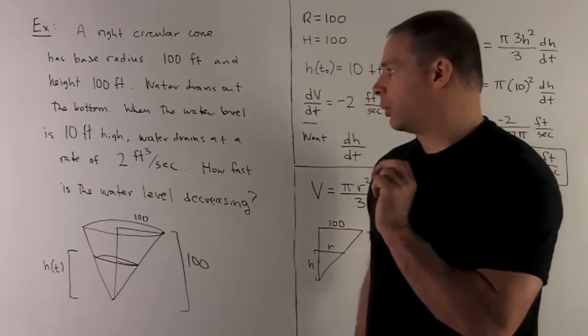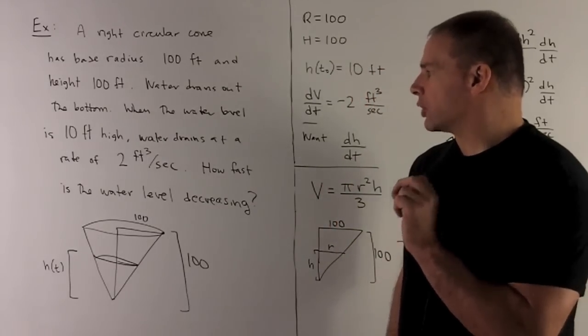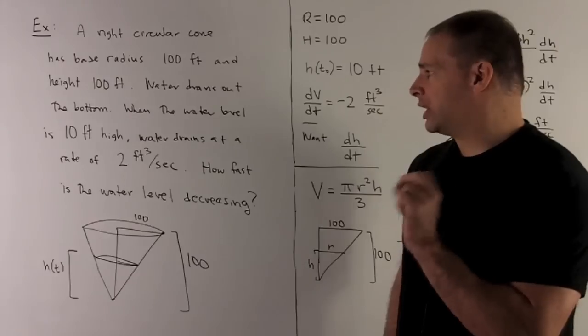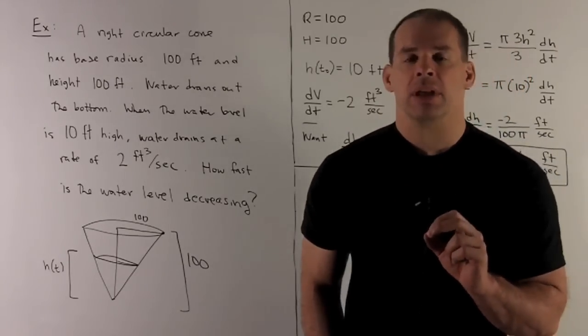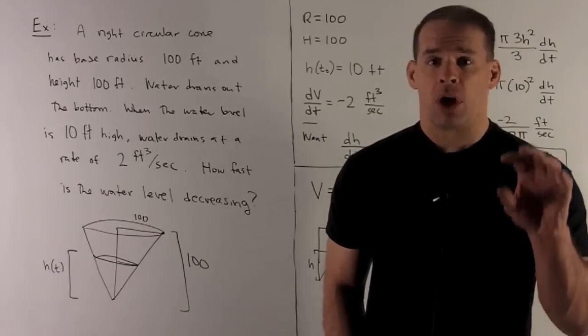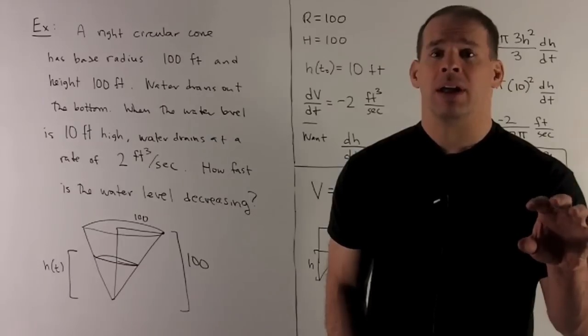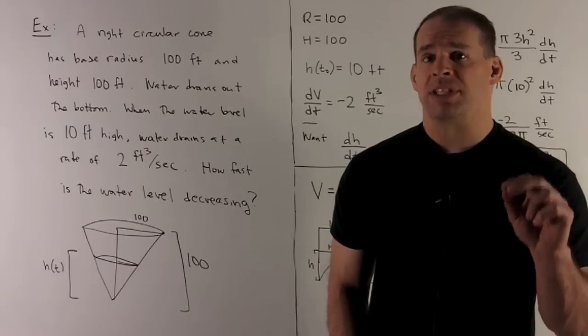All right, let's take a look at what else we have. So, for the smaller cone, we're interested in when the water level is 10 feet high. So, if we take our snapshot, call that time t0, H of t0 is going to be equal to 10.